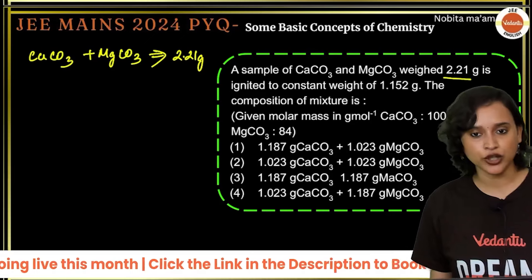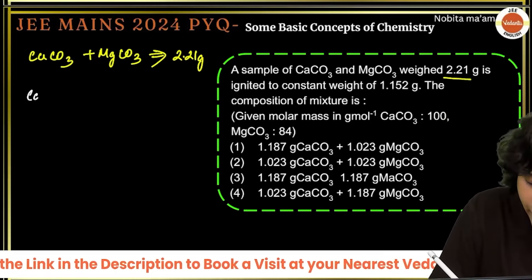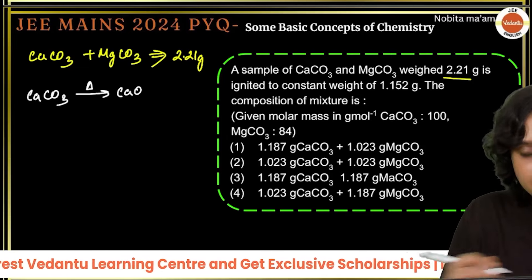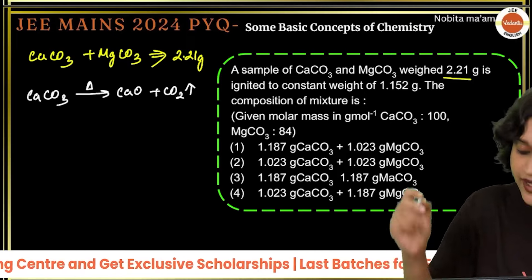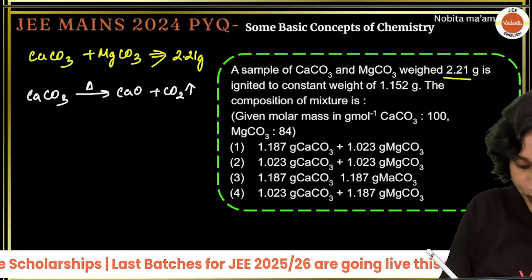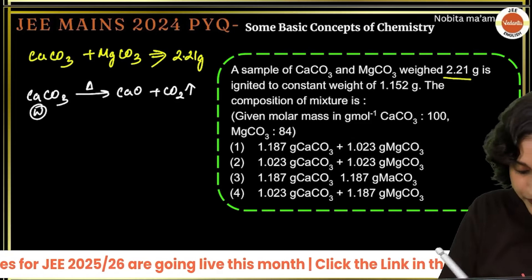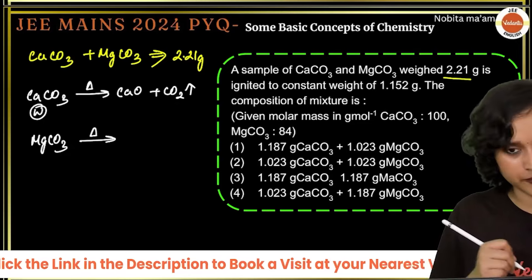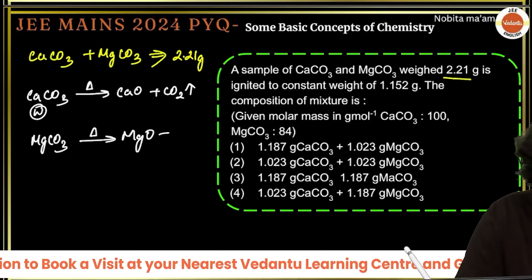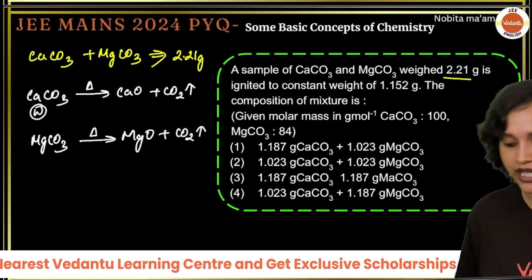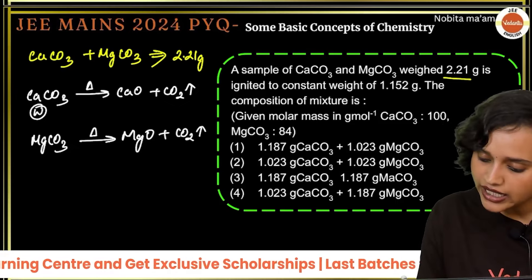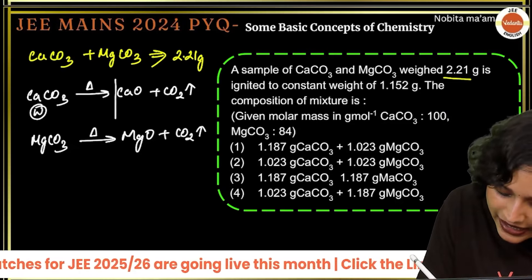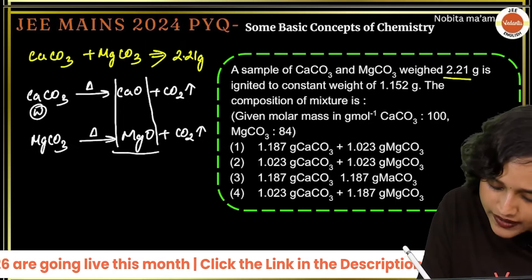When CaCO₃ is heated: CaCO₃ → CaO + CO₂. When MgCO₃ is heated: MgCO₃ → MgO + CO₂. Let the weight of CaCO₃ = w grams, then the weight of MgCO₃ = (2.21 − w) grams. After ignition, only CaO and MgO remain at a constant weight of 1.152 grams. The CO₂ flies away.